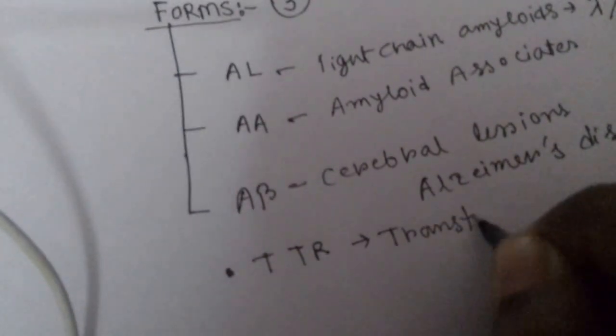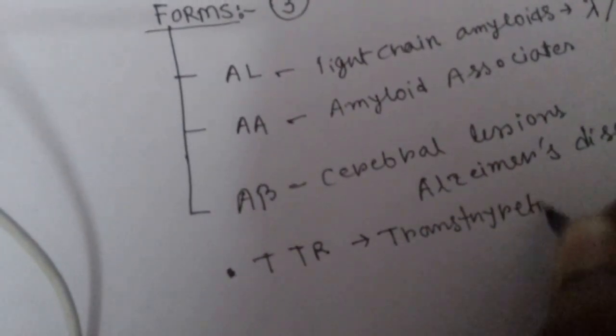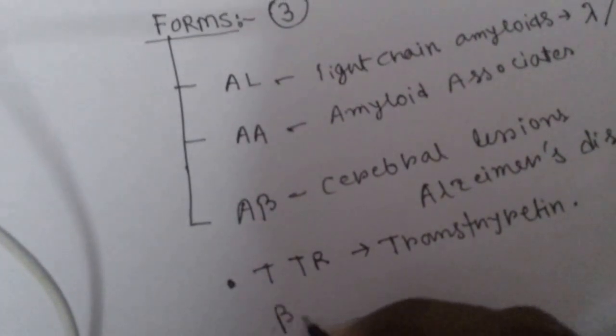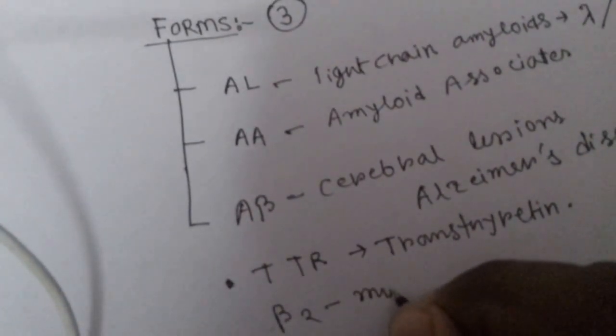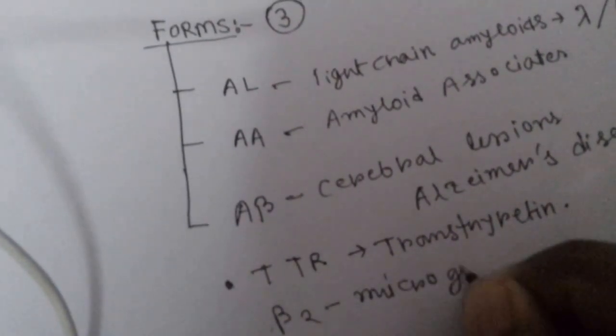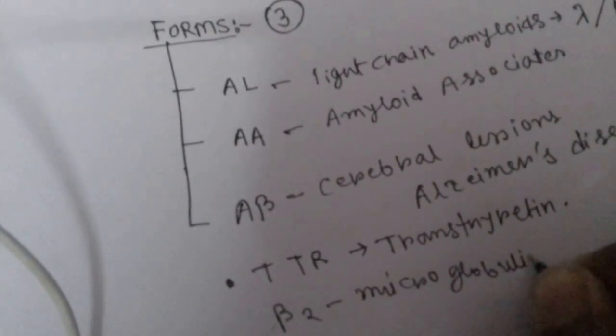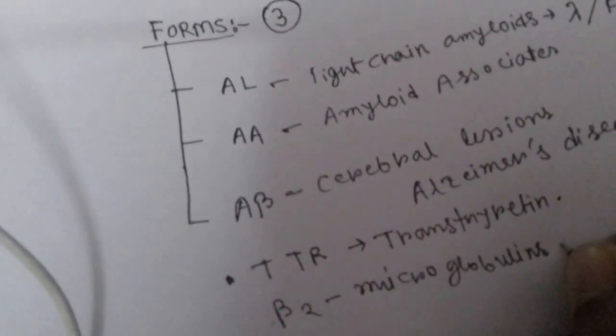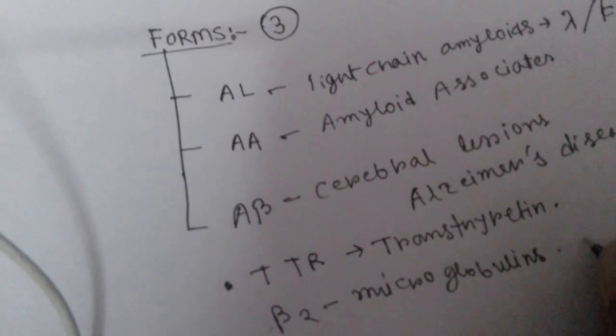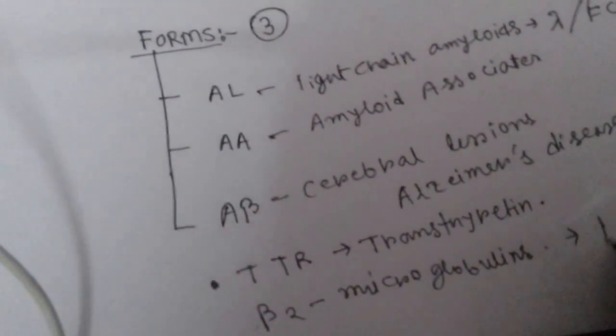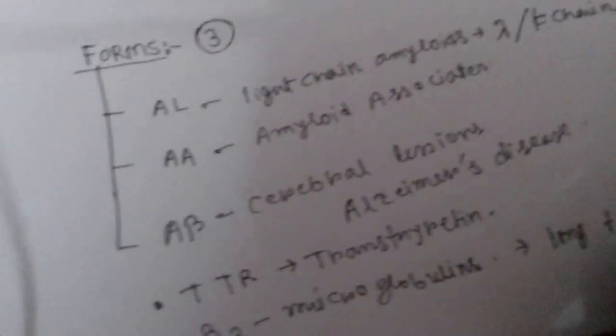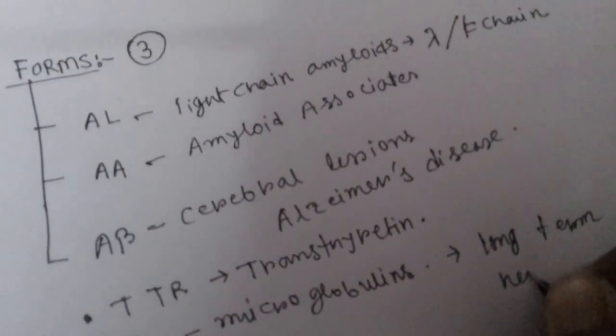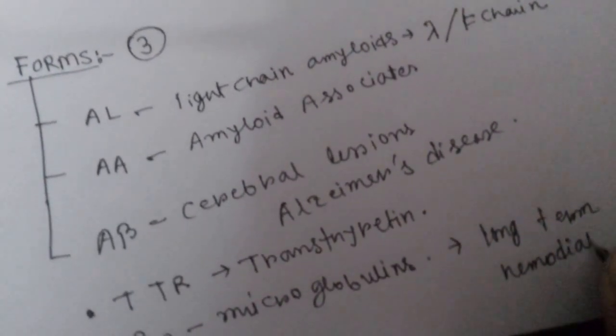And there are beta-2 type, they are microglobulins. They are found in case of long-term hemodialysis.